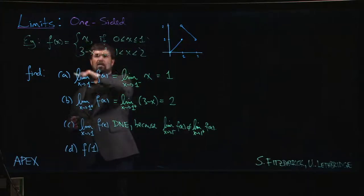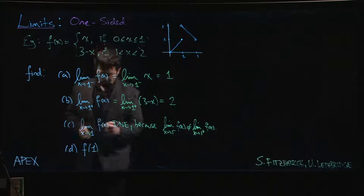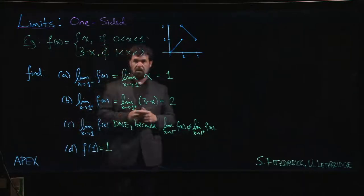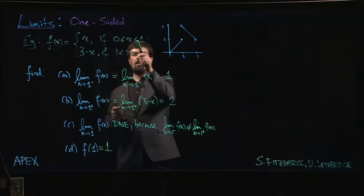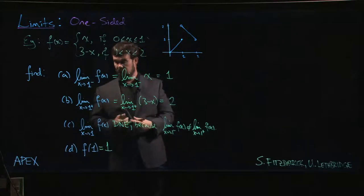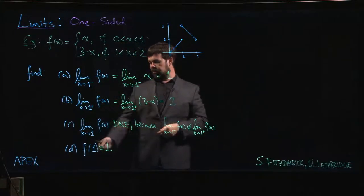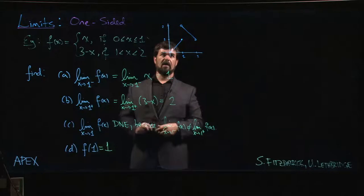So f(1) is just going to be, well we replace x by 1, we get 1. So it's important to make sure that you look to see where that equal sign is when you're evaluating f(1). So we can actually evaluate f(1) even though the limit doesn't exist; the function is still defined at that point.